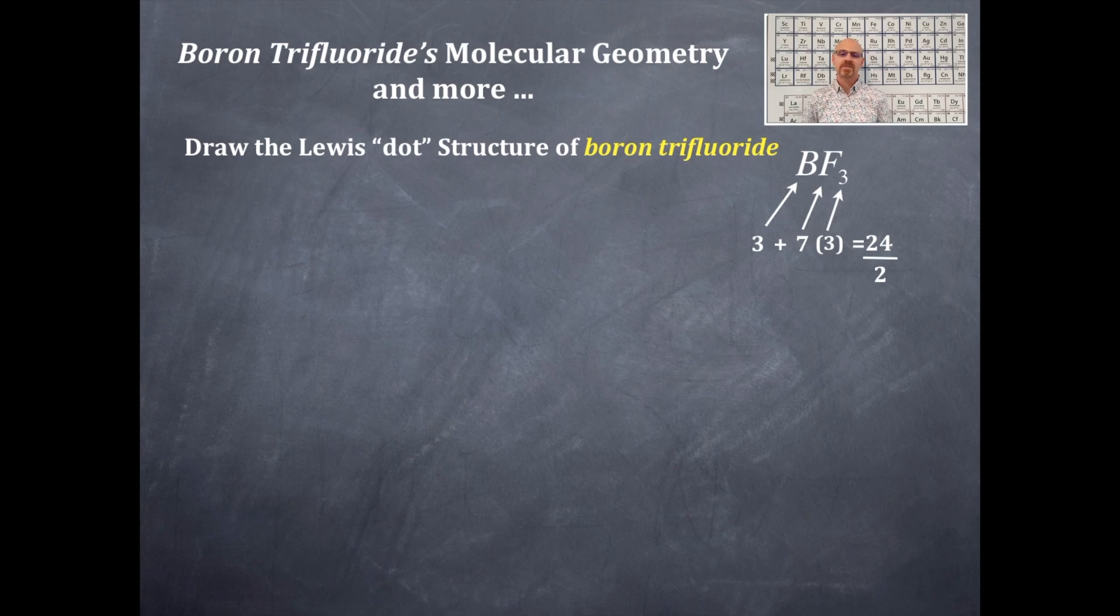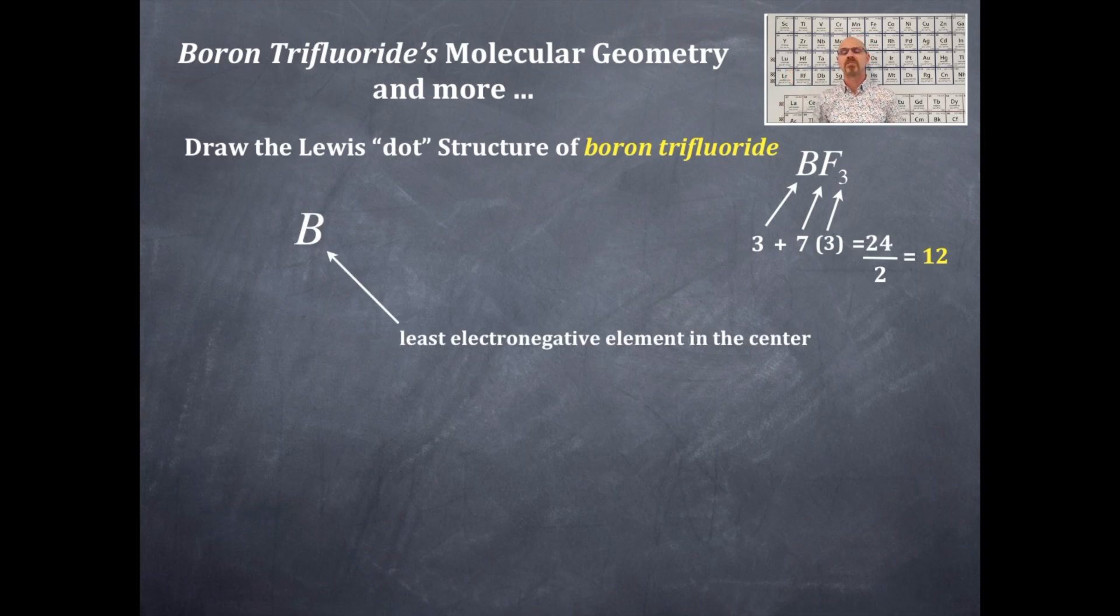Now we're gonna divide this by two just like we did with the methane and we're gonna get pairs of electrons, so that gives us 12 pairs of electrons. The least electronegative element goes in the middle and that's why the boron is in the middle. Then the other elements, that's the three fluorines, surround that boron in that X marks the spot pattern.